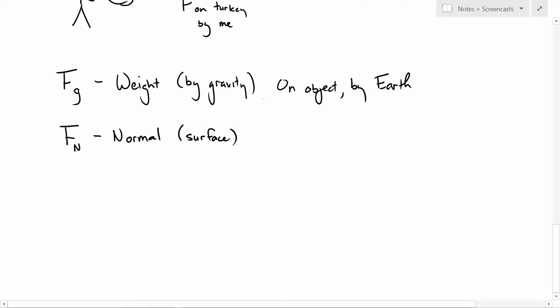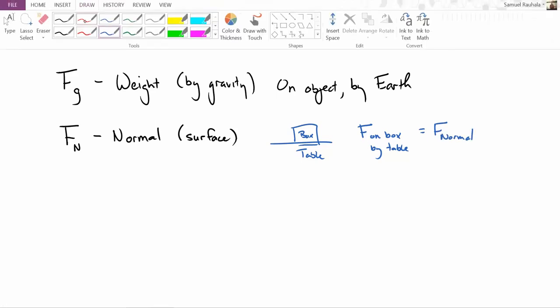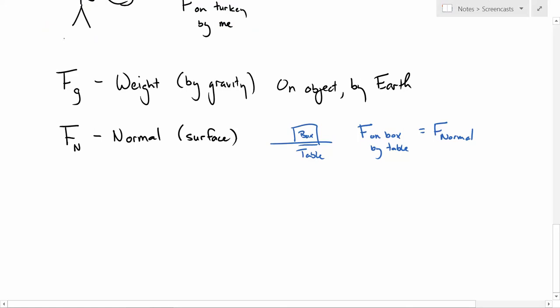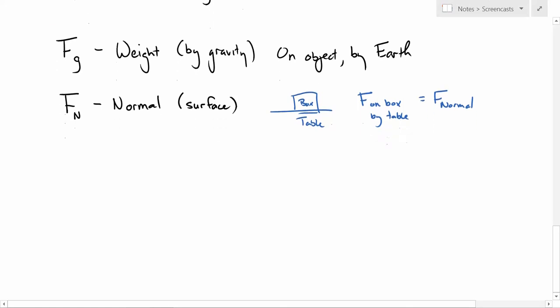So for example, if I have a box sitting on a table, and there is a force on the box by the table, and we would call this the normal force. Normal has a technical definition where it means perpendicular to, and that's kind of where this comes from.